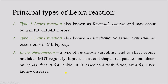There are mainly two principal types of lepra reaction: Type 1 and Type 2. There is also another condition called Lucio phenomena, which is uncommon. Type 1 is also known as reversal reaction and may occur in both paucibacillary and multibacillary leprosy. Type 2 is also known as erythema nodosum leprosum (ENL) and occurs in multibacillary leprosy only. Lucio phenomena is a cutaneous vasculitis affecting people not taking multidrug therapy regularly, presenting as odd-shaped red patches and ulcers on hands, feet, wrists, and ankles, associated with fever, arthritis, and liver and kidney disease.